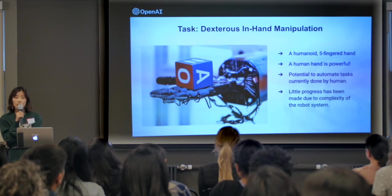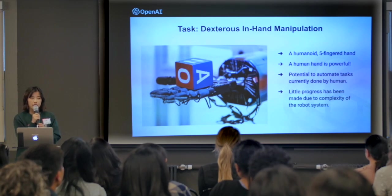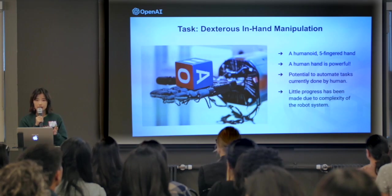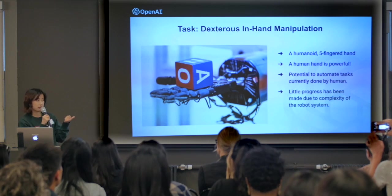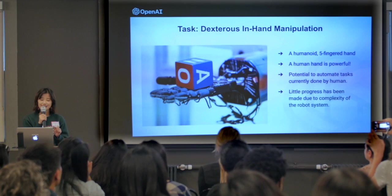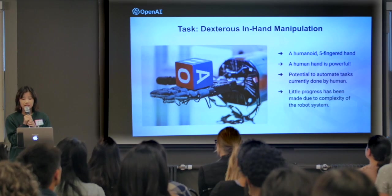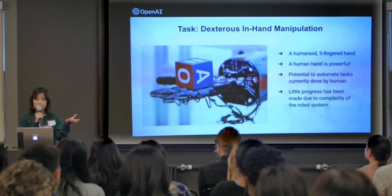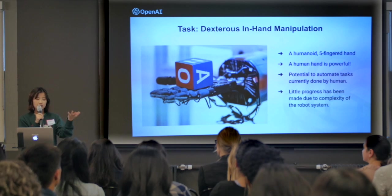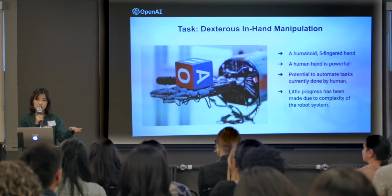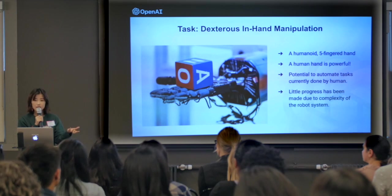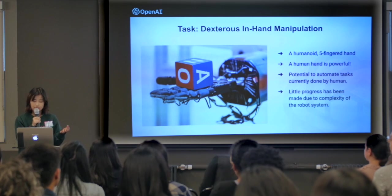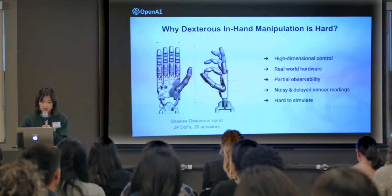In our projects, we're taking a small step towards this goal. We try to teach a human-like robot hand to do in-hand manipulation by moving objects — specifically a six-faced block with letters on it — to a target orientation. We believe this is an important problem because a human-like robot hand is a universal effector. If we can control it really well, we can potentially automate a lot of tasks currently done by humans. Unfortunately, not a lot of progress has been made on human-like robot hands due to the complexity of such systems.